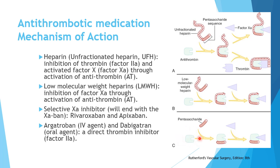Fondaparinux is a pentasaccharide — a much smaller molecule representing only part of the heparin structure. It still works via antithrombin stimulation, but the pentasaccharide–antithrombin combination inhibits only active factor 10 and has no effect on active factor 2. So: unfractionated heparin has 1:1 inhibition of factor 10 and thrombin; LMWH is 4:1 in favor of factor 10; fondaparinux targets factor 10 only.